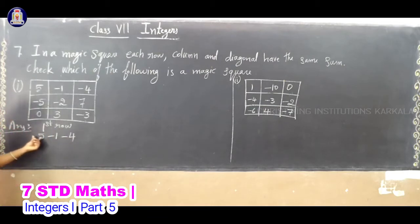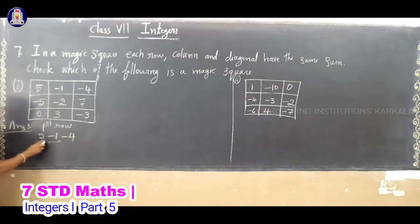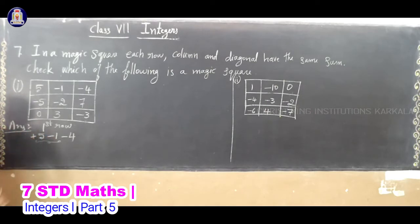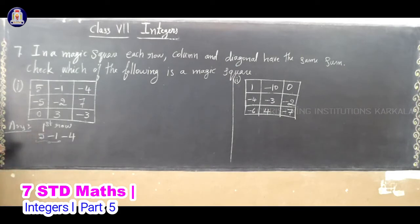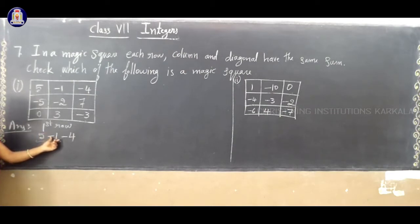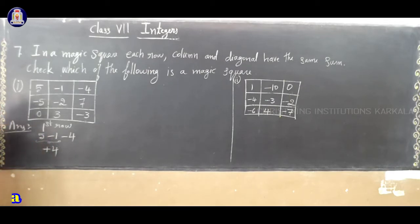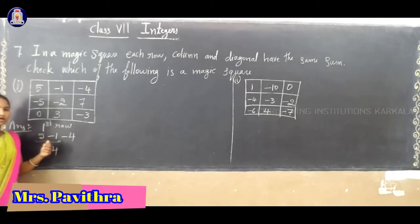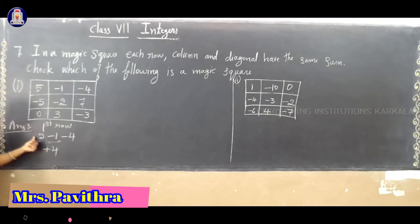First row: the numbers are 5, minus 1, minus 4. So, you have to add these numbers. Plus 5 and minus 1 — different signs, so subtraction. 5 minus 1 gives us 4. The greater number is 5, so the sign is plus. Now, plus 4 and minus 4 — different signs, subtraction. 4 minus 4 gives us 0. So, the first row sum is 0.